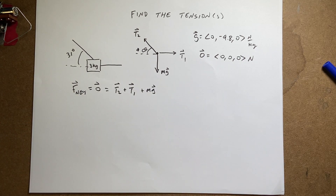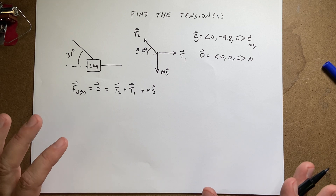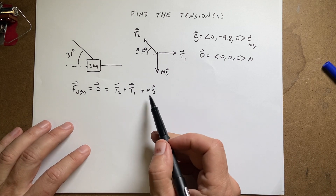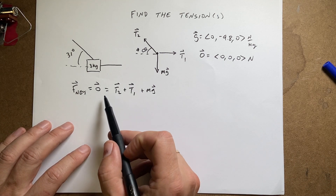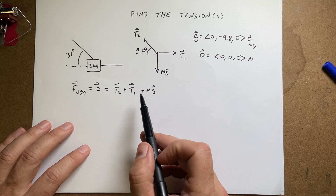You may say Mg is negative — no, Mg is not negative. G has a negative y component, but I'm adding up the vectors, so the sign is already handled there.